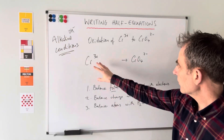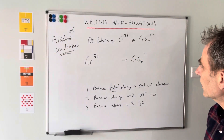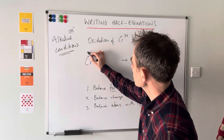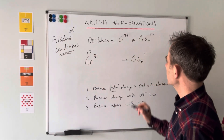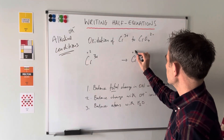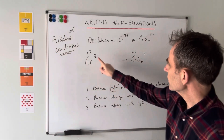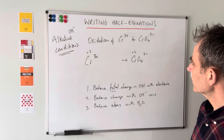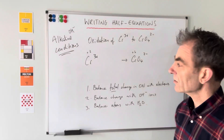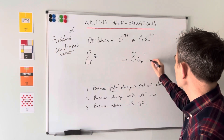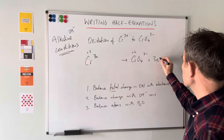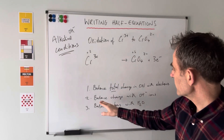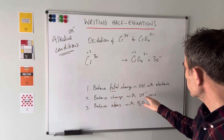Step one: balance the total change in oxidation number with electrons. The oxidation number of Cr3 plus is plus three; CrO4 2 minus is plus six - we saw that in the previous example. That's gone up three, so it's lost three electrons and it's an oxidation reaction, so the electrons will be on the left side of the arrow.